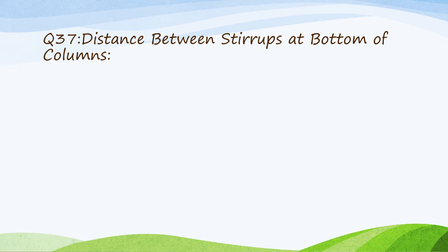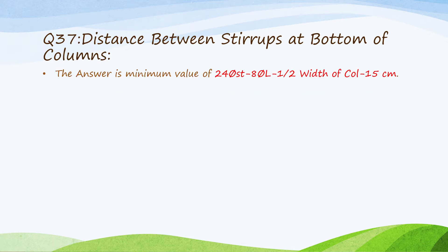Question 37: Distance between stirrups at the bottom of columns. Minimum value of: 24 times diameter of stirrups, 8 times diameter of vertical bars, half of column width, or 15 cm.